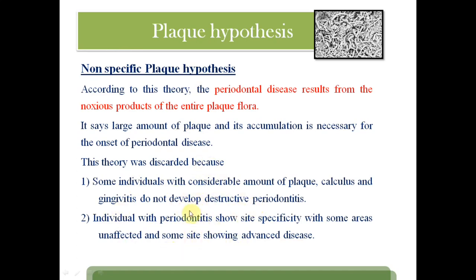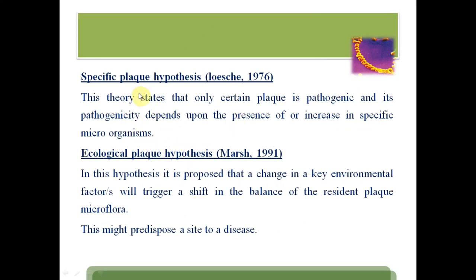Since non-specific plaque hypothesis could not explain these scenarios, the specific plaque hypothesis by Loesche came into existence. This theory states that only certain plaque is pathogenic, and its pathogenicity depends upon the presence or increase in specific microorganisms — not all pathogens are dangerous, only a few. Marsh in 1991 formed the ecological plaque hypothesis, proposing that a change in key environmental factors triggers a shift in the balance of the resident plaque microflora.